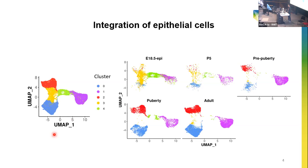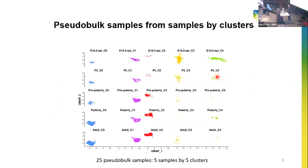After removing all the unwanted cells, we integrated the epithelial cells of the five samples together. The UMAP plot on the left-hand side is colored by five clusters, and the UMAP plots on the right-hand side are colored by five samples. As we have five clusters and five samples, we combine the samples and clusters together to generate 25 new groups, then aggregate cells in each group to form a pseudo-bulk sample — 25 pseudo-bulk samples in total.